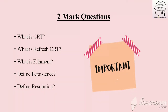What do you call CRT refresh? You need to use the process to repeat the process. Filament is a heating element. Then, persistence — how long they emit light. When it emits, we get a clear-cut image. That is persistence.